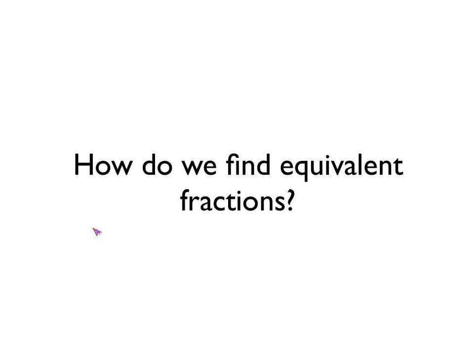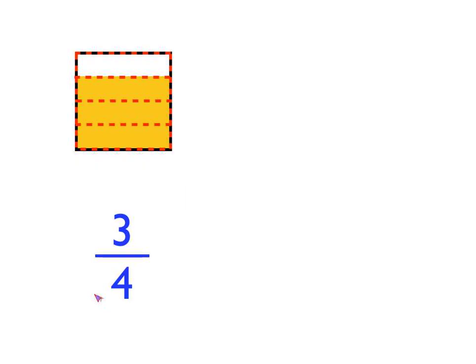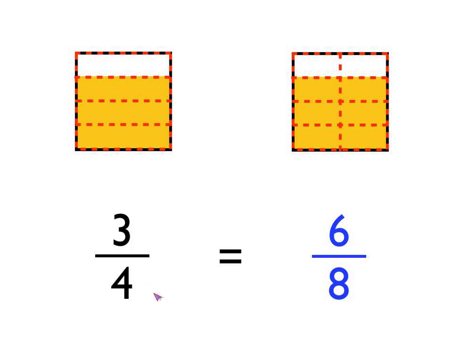Let's have a look at how we actually go about finding equivalent fractions. If I said to you, find an equivalent fraction to three-quarters, here's how we go about it. Here's a square — three-quarters of it is shaded in orange. I've split it into four equally sized pieces, and three of them are shaded in. An equivalent fraction can be found by taking the same proportion in a second square. Now I divide it into eight equally sized pieces, and six of them are shaded in orange. So the equivalent fraction is six-eighths.